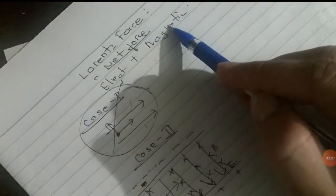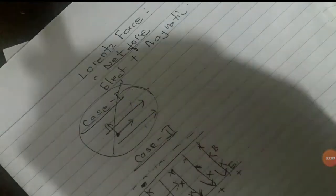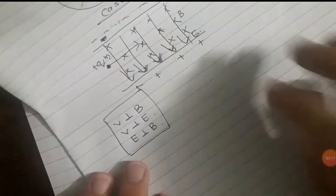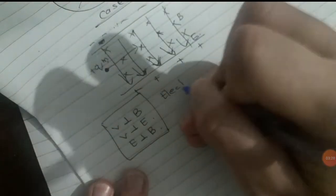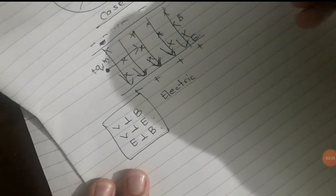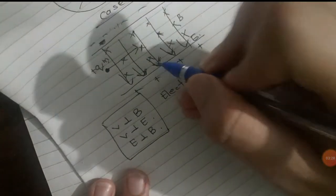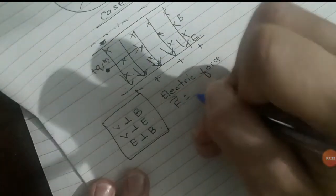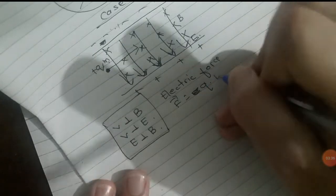First of all, we have electric force — which is part of the Lorentz Force — and we have magnetic force. So we have two forces making up the net force. As noted in the last video, the electric force is in the direction of the electric field. The electric force is charge times electric field: Q into E.